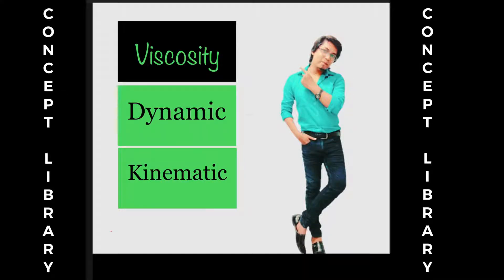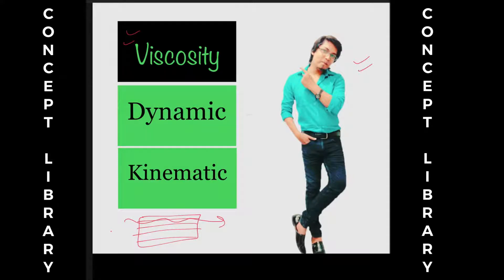Hey, this is Vikas again. I thought to give my pick on the explanation. You will already have some basic idea about viscosity — viscosity is nothing but the resistance provided between the layers of a fluid. Whenever a fluid is flowing, that resistance comes into picture. If a fluid has layers, when it flows there is resistance provided by each layer to every nearest layer, and we consider that resistance as viscosity.